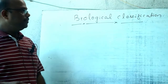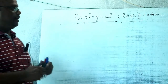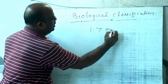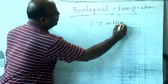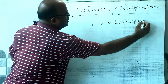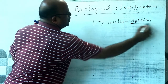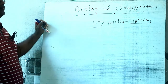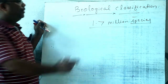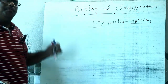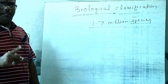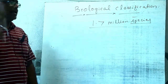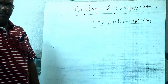In nature, approximately 1.7 million species of living organisms are occurring. That means a vast number of living organisms, including microbes to higher organisms, occur in nature.